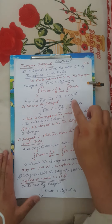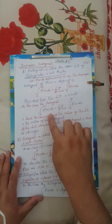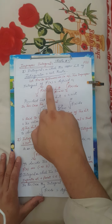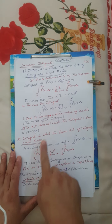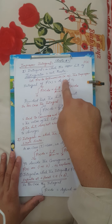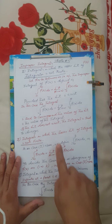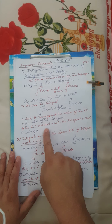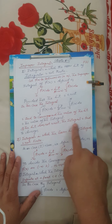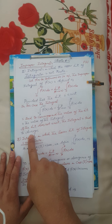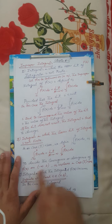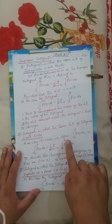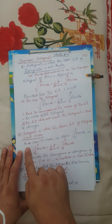If the limit of this integral exists, then we say that the integral of f(x) on the interval from a to plus infinity is convergent. If the limit does not exist, the integral is said to be divergent.